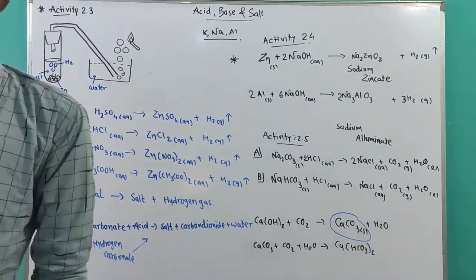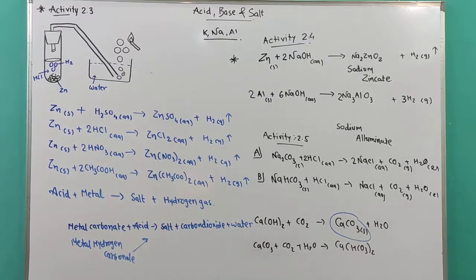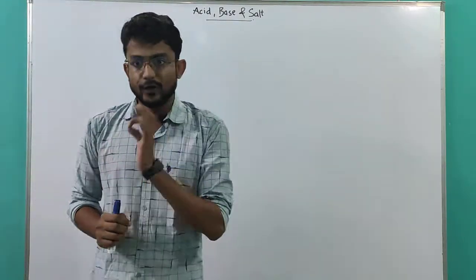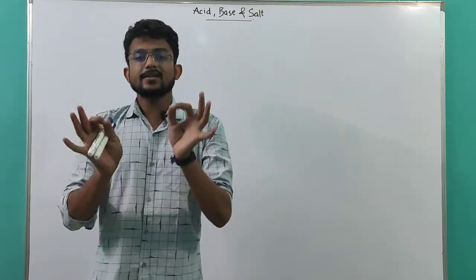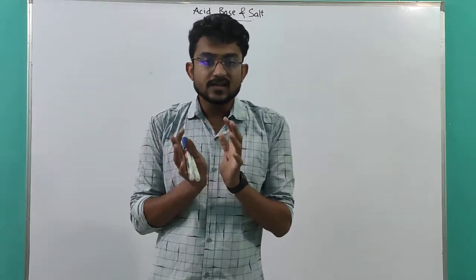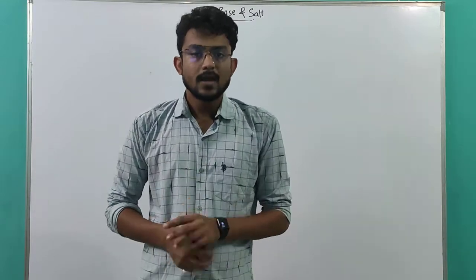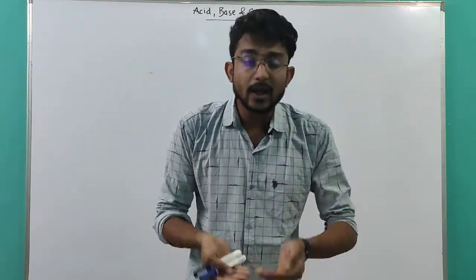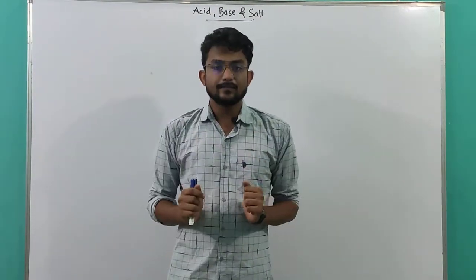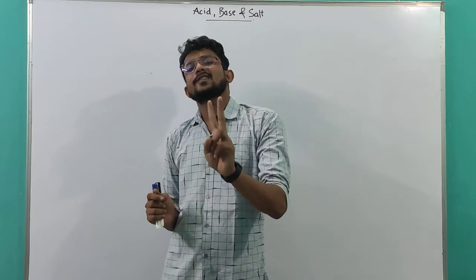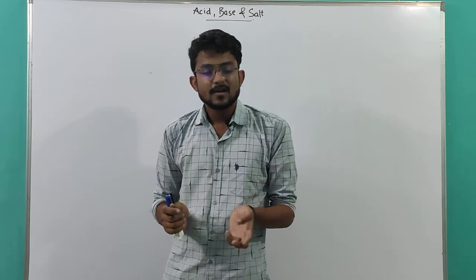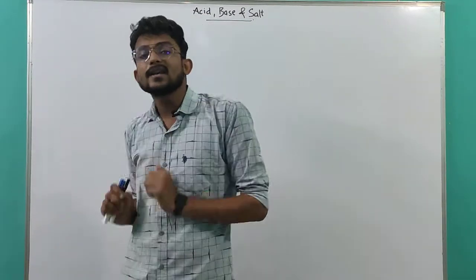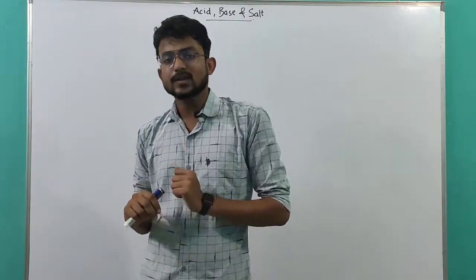Now let's talk about how acid and base react with each other — Activity 2.6, topic 2.1.4. Before starting, a few clarifications: acids are colorless, and bases are also colorless. So if a change occurs inside, how will we know acid and base have reacted? For that, we use an indicator — as I mentioned in the previous lecture — phenolphthalein.